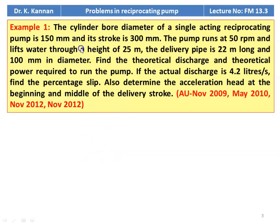Example number 1: The cylinder bore diameter of a single acting reciprocating pump is 150 mm and its stroke is 300 mm. The pump runs at 50 RPM and lifts water to a height of 25 meter. The delivery pipe is 22 meter long and 100 mm diameter. Find the theoretical discharge and theoretical power required to run the pump. If the actual discharge is 4.2 liters per second, find the percentage of slip. Also determine acceleration head at the beginning and middle of the delivery stroke. This is from November 2009, May 2010, and November 2012 question papers.